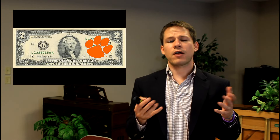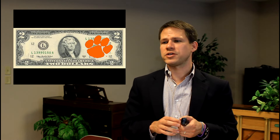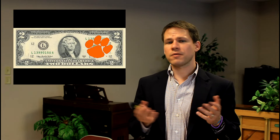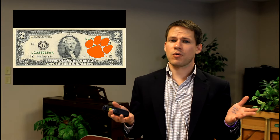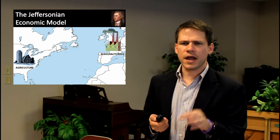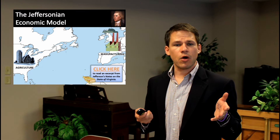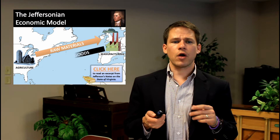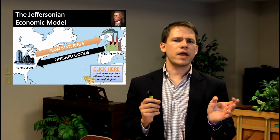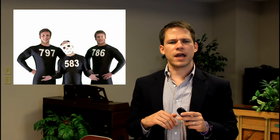It's no accident that Jefferson is on the $2 bill, which Clemson fans use when they go to bowl games — Jefferson, champion of agriculture, and Clemson, a more agricultural university historically. The Jeffersonian economic model had states producing raw materials and trading with Europe for finished goods, with free trade going on between the United States and Europe.